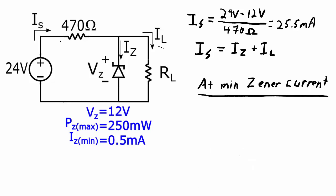Now let's look at the other extreme, when we have the minimum amount of zener current. So the question is, at what load resistance will the zener diode drop below that minimum current and therefore fall out of regulation? Well, these two points still hold true. The source current is still going to be 25.5 milliamps. And that source current will also be equal to the zener current plus the load current.